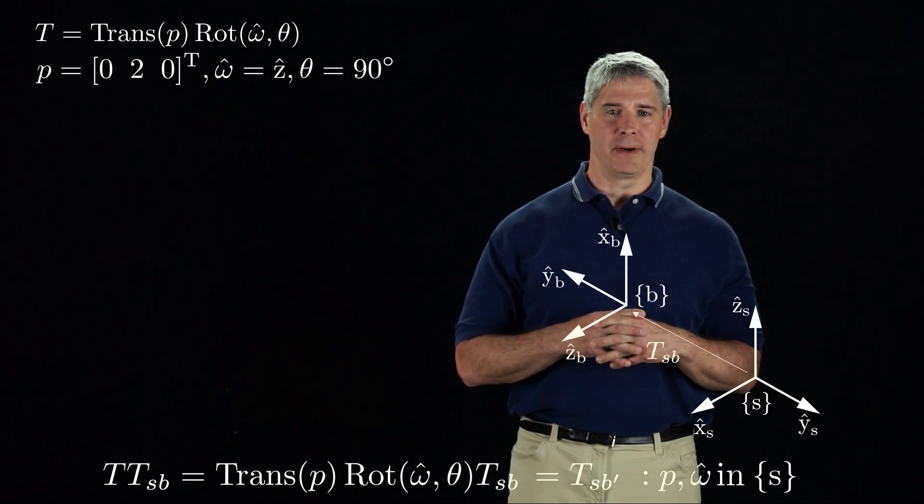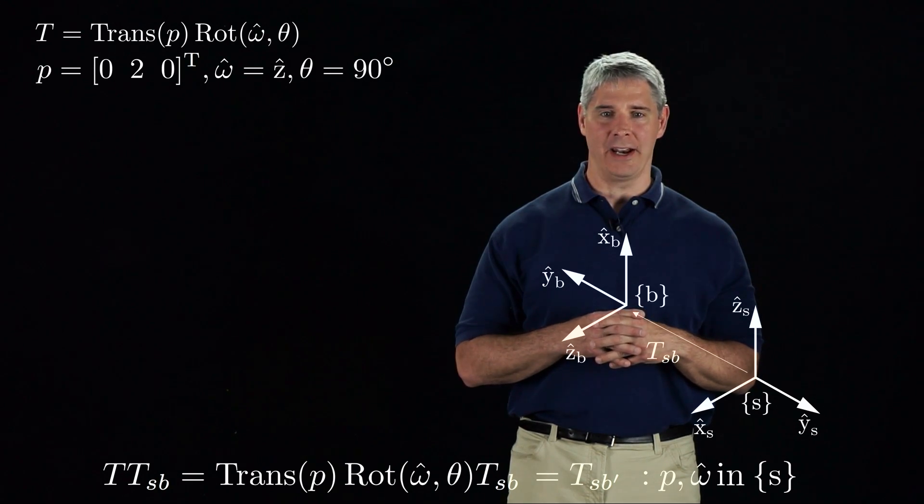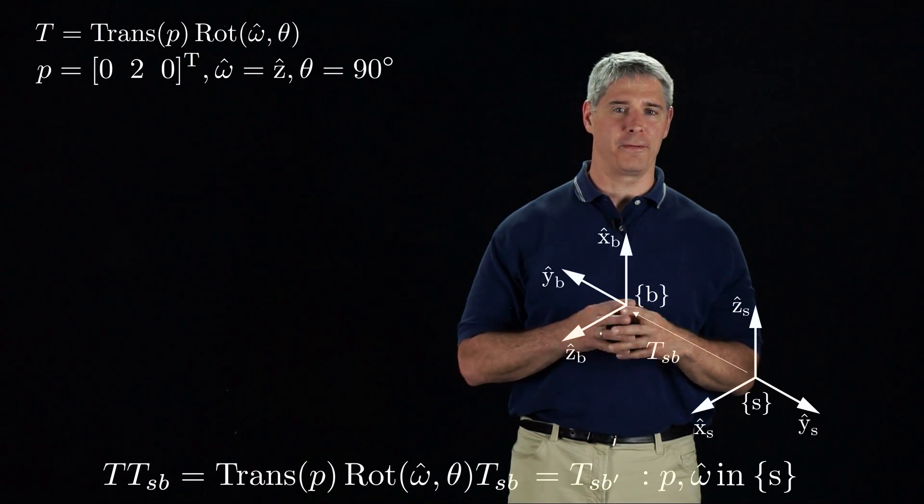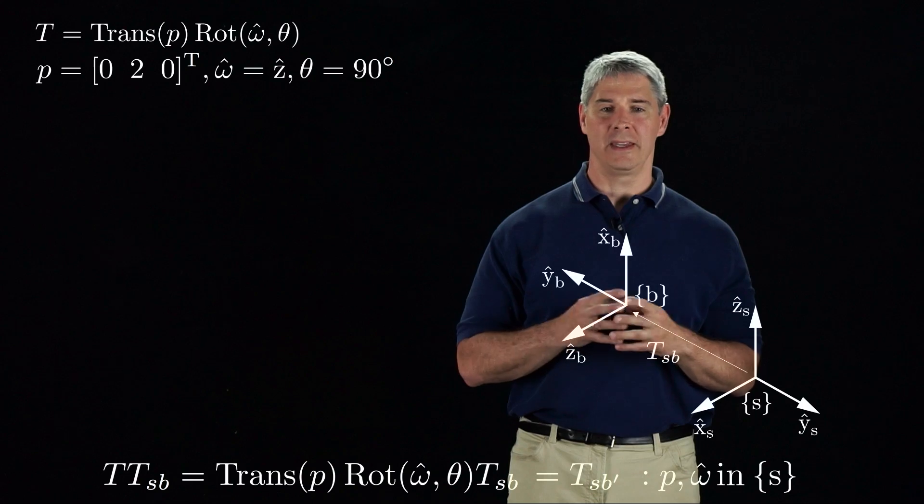If we left-multiply TSB by T, the vectors P and omega-hat are considered to be expressed in the frame of the first subscript of TSB, the S-frame.